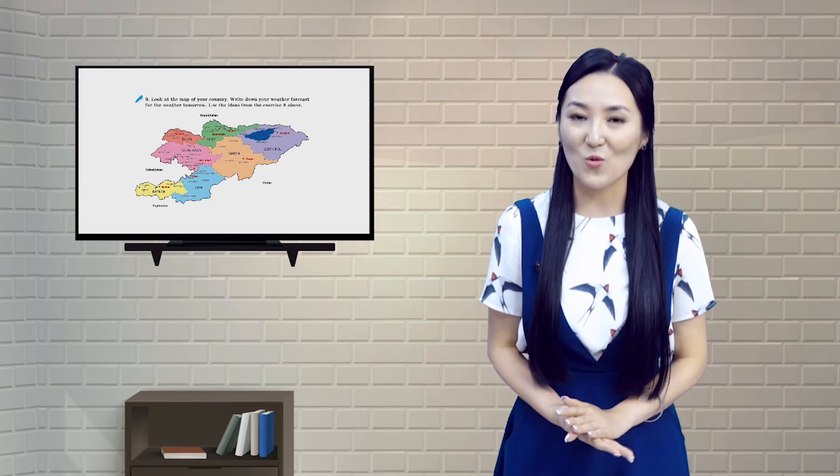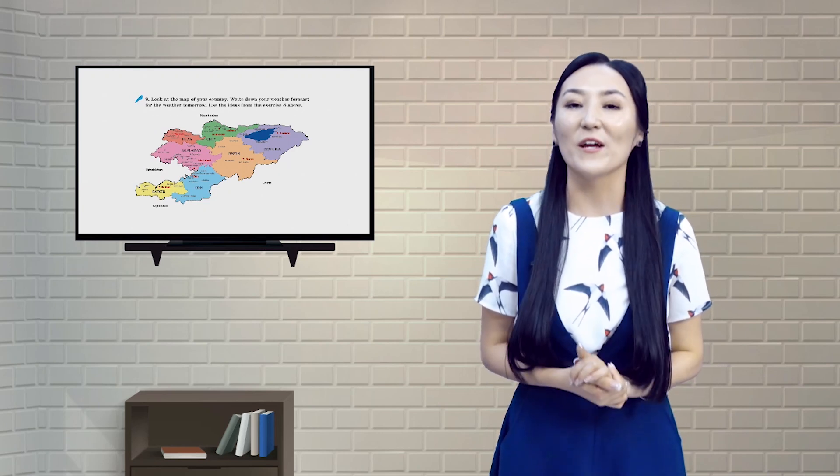This is the map of our country. Look up the actual forecast for the weather tomorrow in Kyrgyzstan online or on your phones and write it down. Now, count from one to four. Ones will work together; the second, third and fourth groups also will work together. In your groups of four, tell the weather forecast for the north, south, west and east parts of our country. One person can talk about the weather forecast in one part of our country. For homework, write down the forecast of another country for the weather tomorrow. Our lesson is over — take care, try to check the weather forecast and carry your umbrella in case it rains cats and dogs.